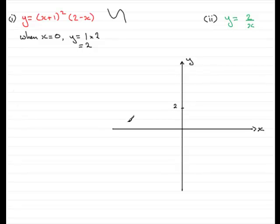Okay. Next I'd want to find out where this graph crosses the x-axis. And when a graph crosses the x-axis its y coordinate will be 0. So all I need to do is say when y equals 0.